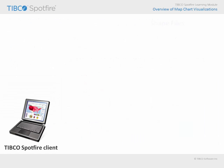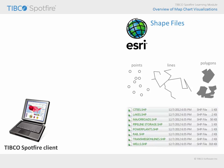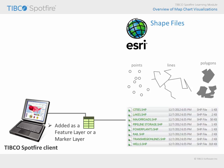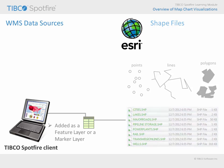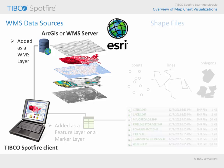The Spotfire client has the ability to open a shapefile, commonly created with Esri software, as a data table, which includes the geometry, positioning information, and any other data related in that file type. Once a shapefile is made available as a data table in Spotfire, it can be added to map chart visualizations as a feature layer or a marker layer, if appropriate. Another option, which is also often Esri related, is the ability to add information from an ArcGIS server or web map service to a map chart. This information is not imported as a data table, but instead is added directly as a WMS layer to Spotfire map charts.